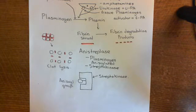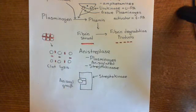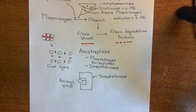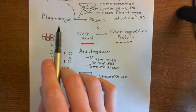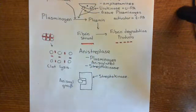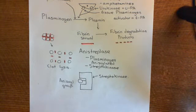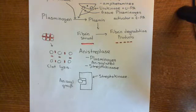We've seen streptokinase and also anistreplase, which is a mixture of anisylated streptokinase and plasminogen. Both of these drugs work by converting plasminogen into plasmin within the plasma, and both of them are given as intravenous injections. When they convert plasminogen into plasmin, the plasmin enzyme will break down fibrin strands into fibrin degradation products, and when you break down the fibrin network within a thrombus, that causes the thrombus to break apart — so-called clot lysis, thrombus lysis, or thrombolysis.